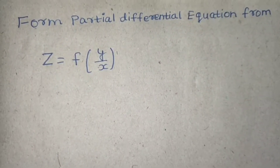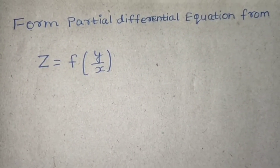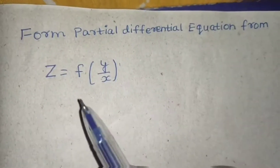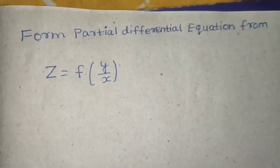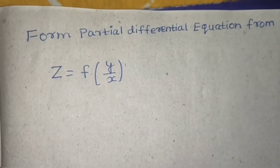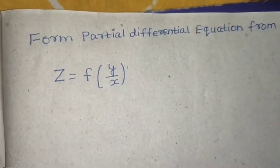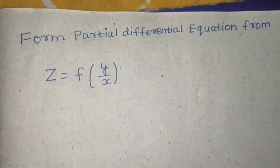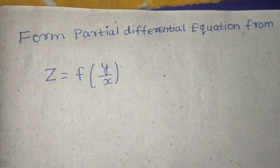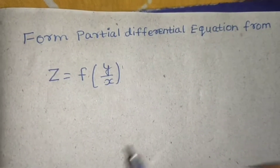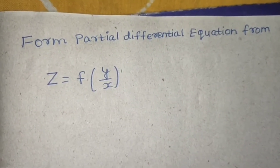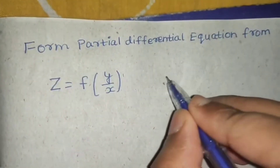Hello everyone, let's solve this question from partial differential equations. We have to form a partial differential equation from z = f(y/x). For more videos on the same topic, refer to the description for playlists. Since z is given to be a function of y/x, we have to remove this arbitrary function. Let's assume this as equation number one.